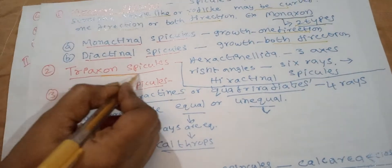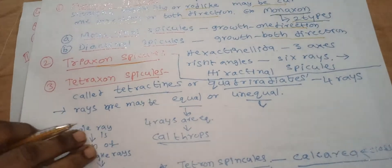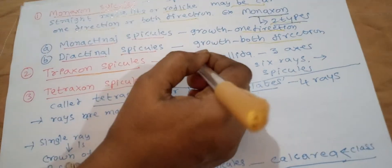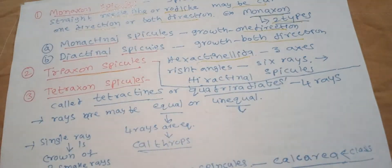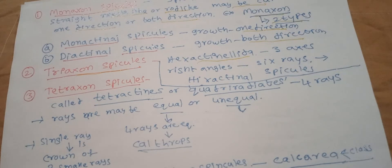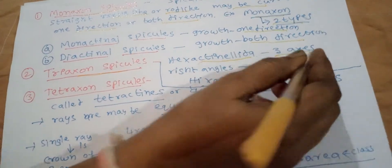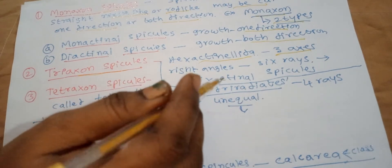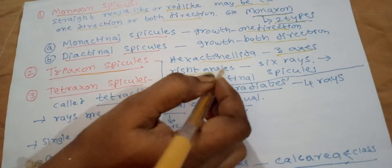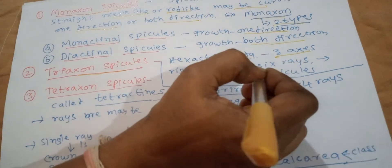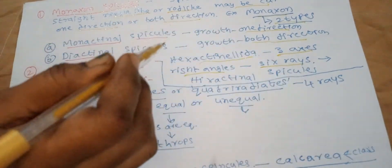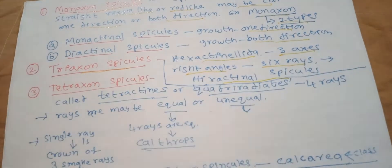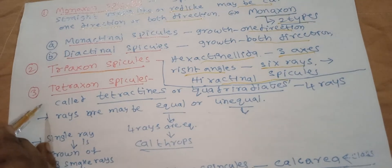Second type: triaxon spicules. These are characteristic of the class Hexactinellida. Triaxon spicules have three axes that cross one another at right angles to produce six rays or six ends. These are therefore called hexactinal spicules.